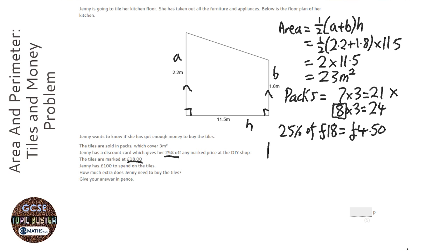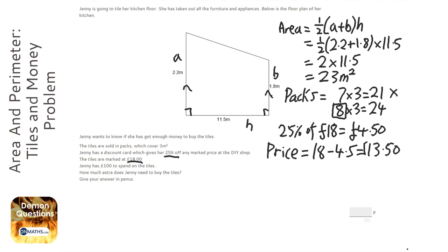So the price is going to be £18 take away 4.5. £18 take away 4 is £14, take away 0.5 is £13.5, so £13.50.